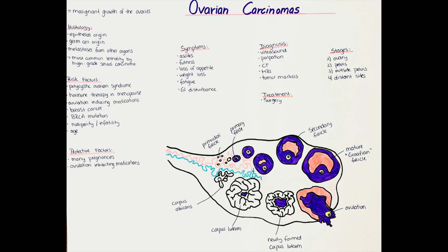Hello and welcome to this channel. My name is Victoria and in this video we will talk about ovarian carcinoma. An ovarian carcinoma is a malignant growth in the ovaries. It is the second most common malignant genital carcinoma of the female. The ovaries are usually around the size of an almond and they are responsible for the production of estrogen and progesterone, as well as for the maturation of an egg in each menstrual cycle.